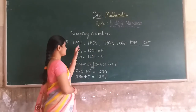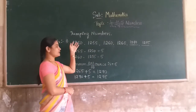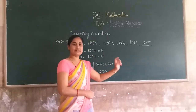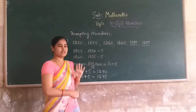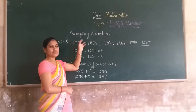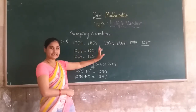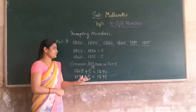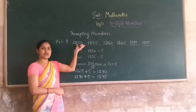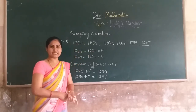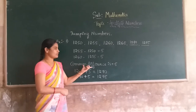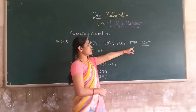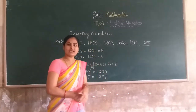Here, students, in this number series you can jump 5 steps at a time in the forward direction. This is the identification of how many steps you jump in the forward direction. If you identify the common difference, you will get the next number of the given series.